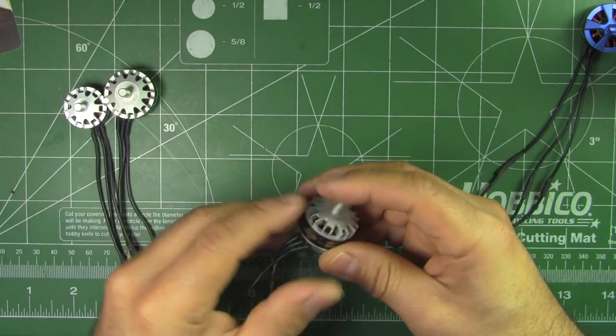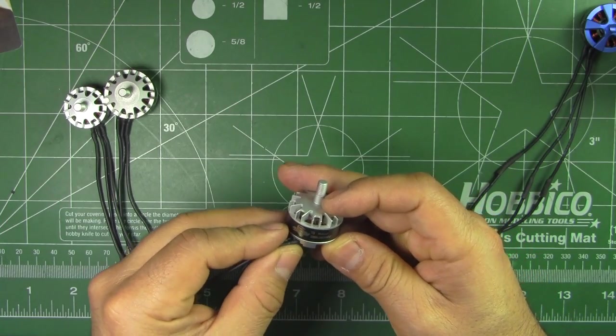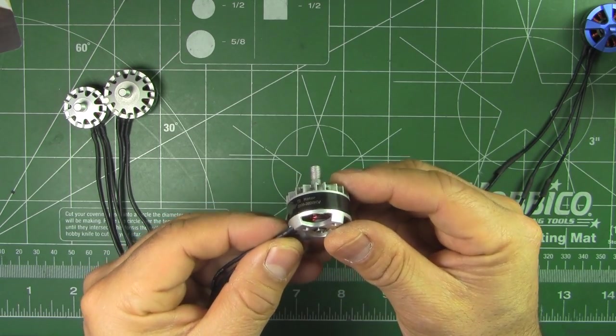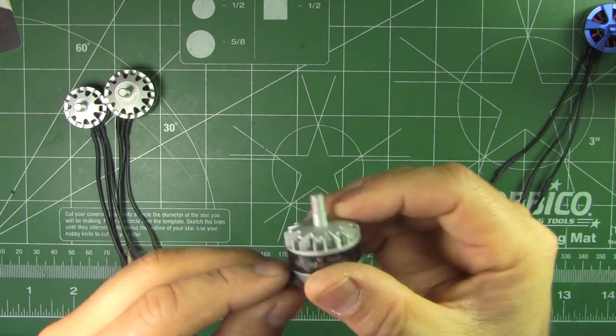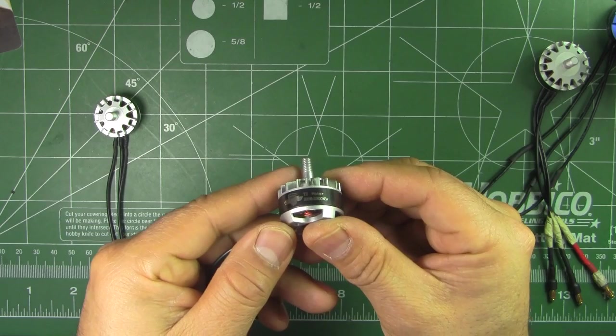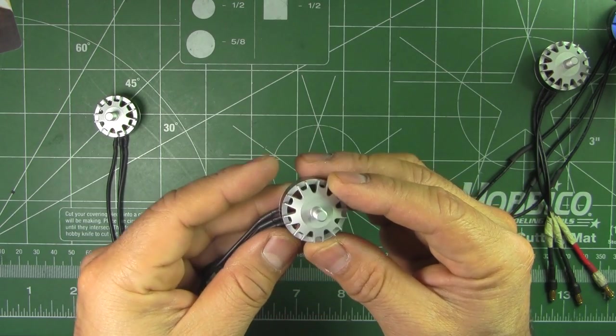They sent the Tornado T2 2206 2600 KV and the T2 2206 2300 KV.